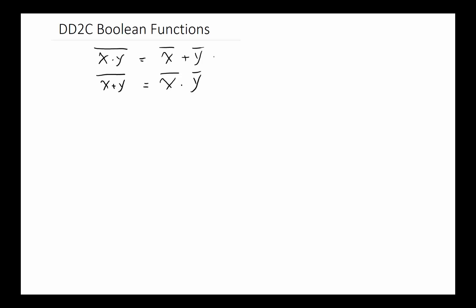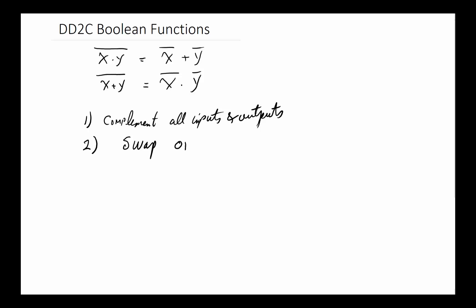A useful thing to remember: if I want to go between OR and AND, I have to first complement all inputs and outputs — remembering that if the output is already complemented, complementing it again makes it uncompleted — and second, I have to swap, or interchange, ANDs and ORs.